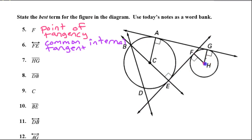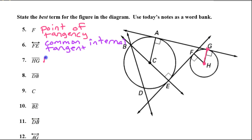Here's H and here's G — here is segment HG. That is a radius. It goes from the center out to the edge of the circle. That is a radius.